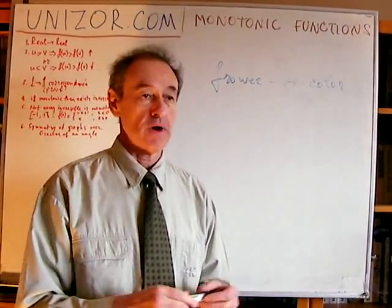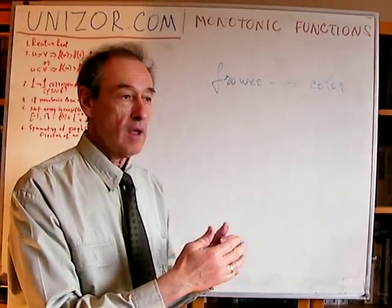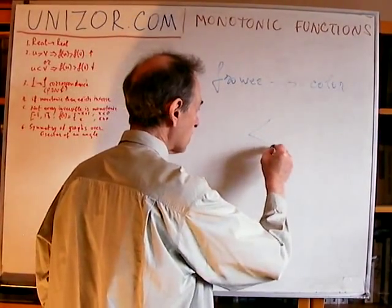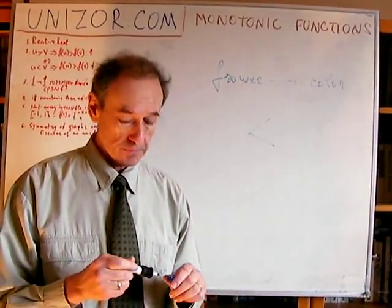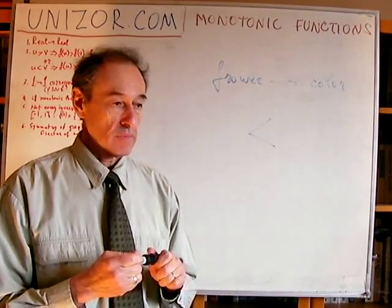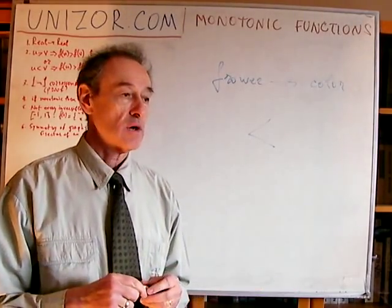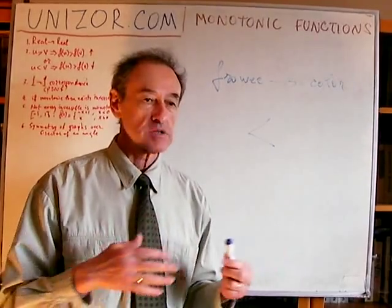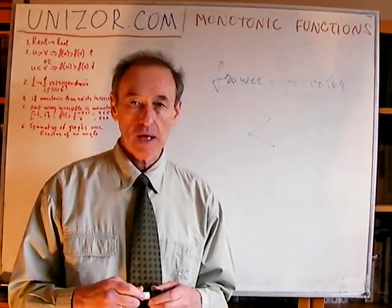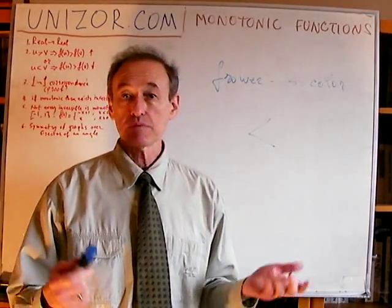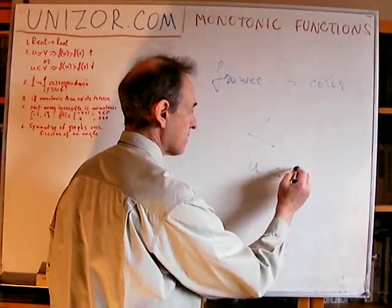So what does it mean for a function to be increasing or decreasing? First of all, it means that in the domain there must be something which we can talk about as a relationship — less than, greater than, or equal, etc. The most typical example of such a domain is the real numbers. Mostly we will deal with functions defined on the domain of the real numbers, and among real numbers we do have this relationship — we can say that one real number is less than another.